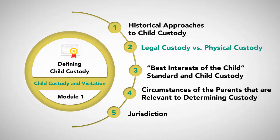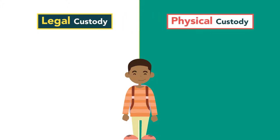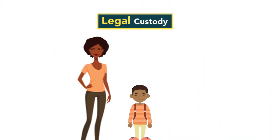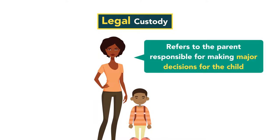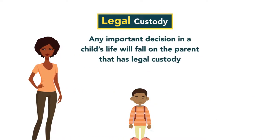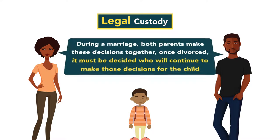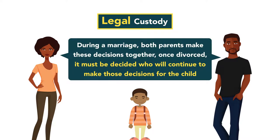Child custody is broken down into two types: legal custody and physical custody. Legal custody refers to the parent responsible for making major decisions for the child, such as religious upbringing, health, welfare, and education. Any important decision in a child's life will fall on the parent that has legal custody, which may be vested in one or both parents. When a child's parents divorce, it must be decided who will continue to make these decisions for the child.